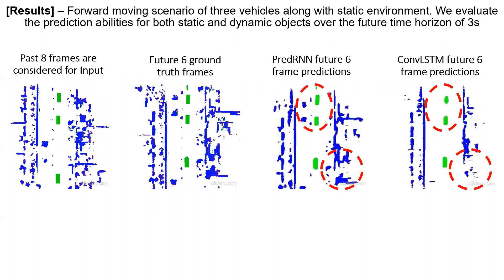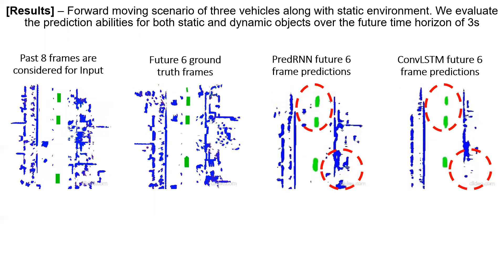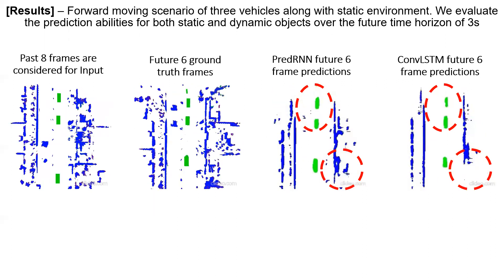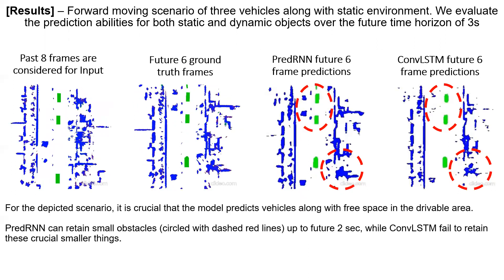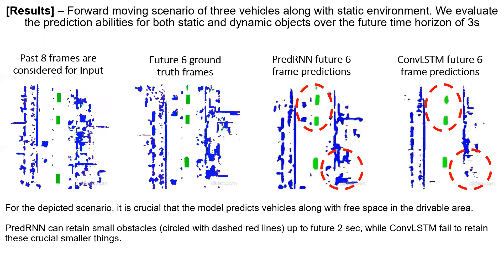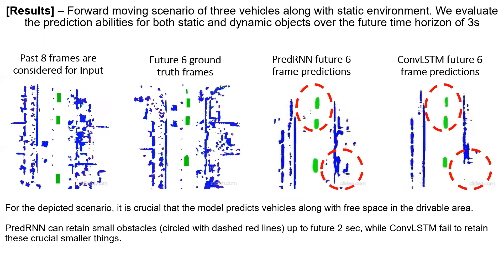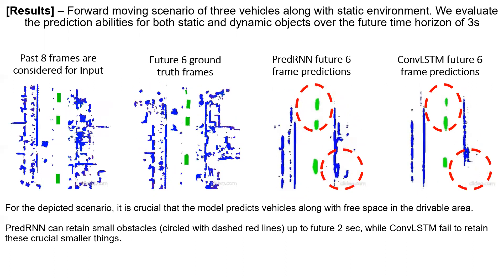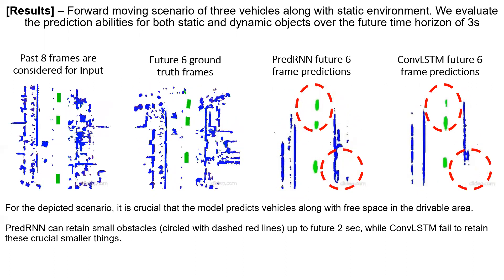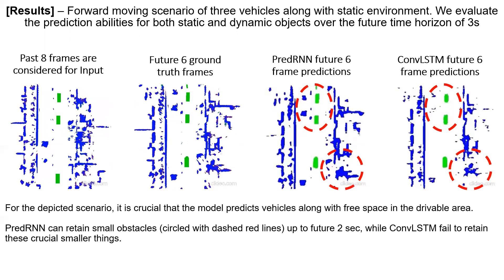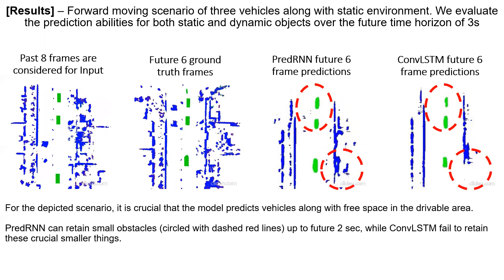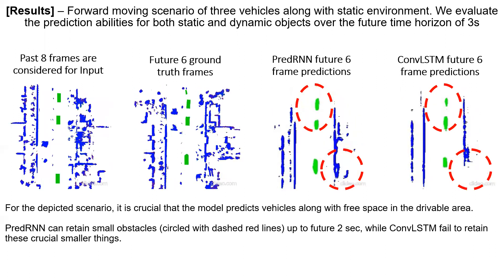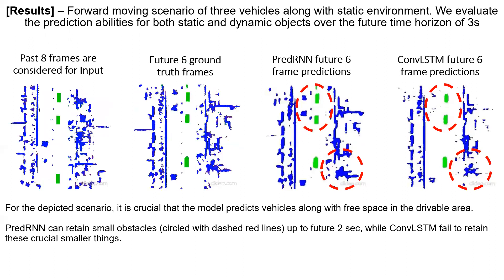Here, we present a qualitative comparison of Pred-RNN and ConvLSTM networks with respect to ground truth. For the depicted scenario, it is crucial that the model predicts vehicles along with free space in the drivable area. Pred-RNN can retain small obstacles up to future two seconds while ConvLSTM fails to retain these crucial smaller objects.